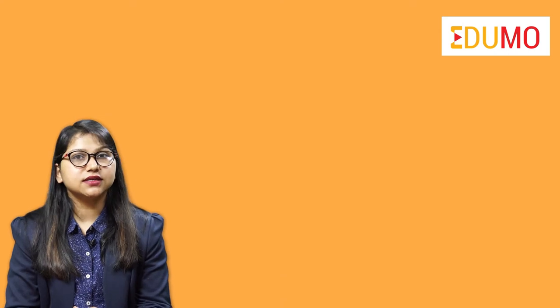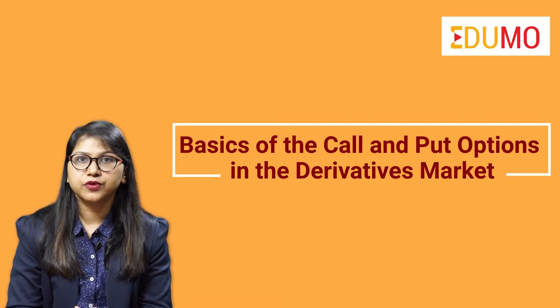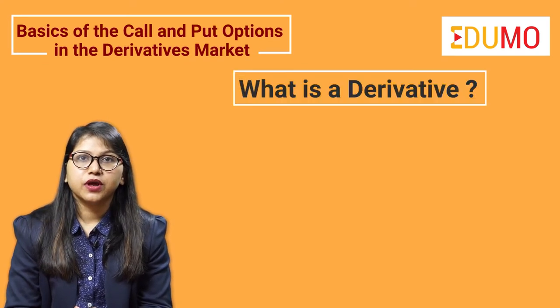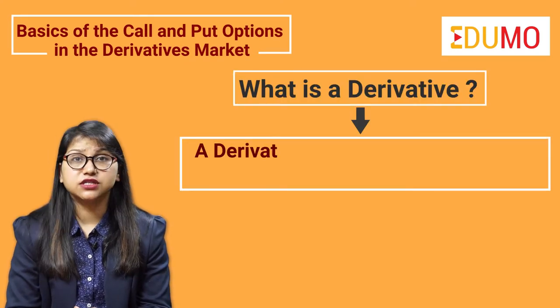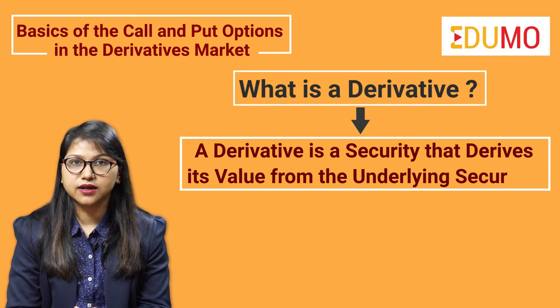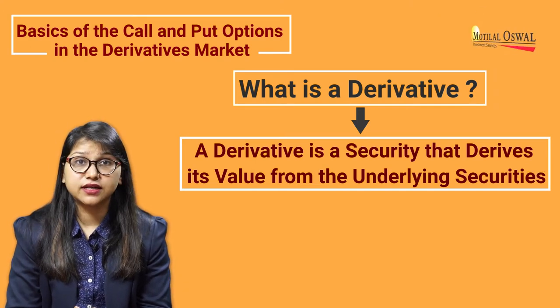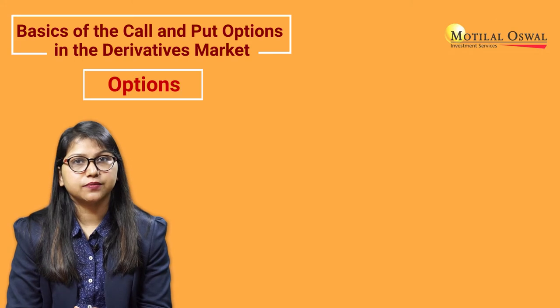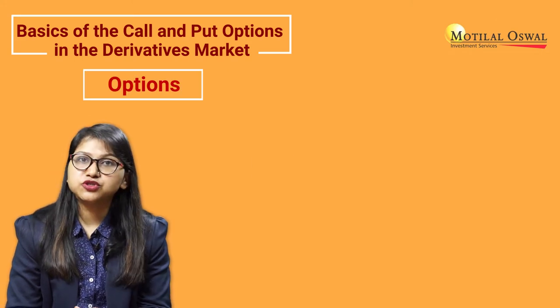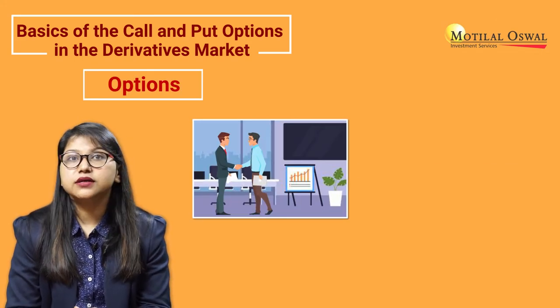In this video we will be discussing the basics of call and put options in the derivatives market. A derivative is a security that derives its value from the underlying securities. One of the ways to trade in derivatives is through options. An option is an instrument that provides its holder the right to buy or sell any underlying securities at a fixed price and at a fixed date in the future.